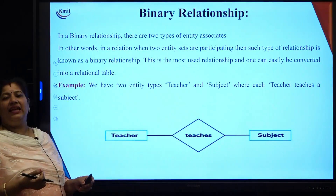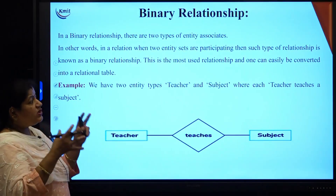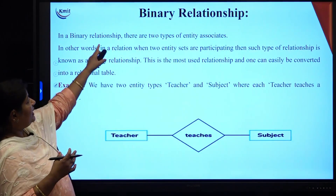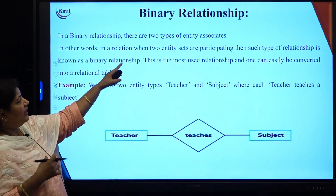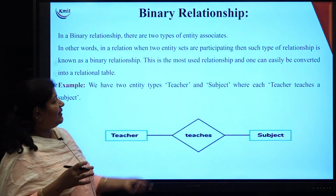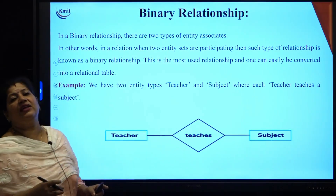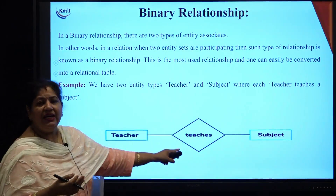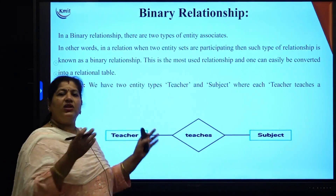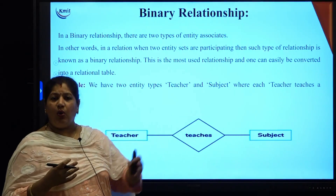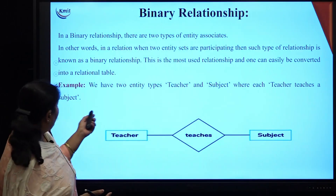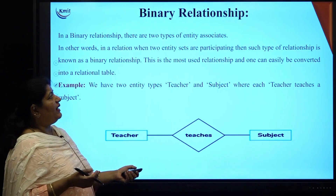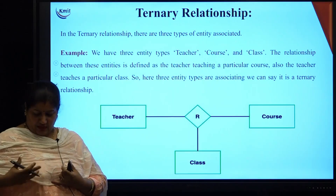Coming to binary relationship, this is the most common type of relationship. There are two entity sets associated in a relation. When two entity sets are participating, it is called a binary relationship — for example, a teacher teaching a subject, or a student enrolling into a course.